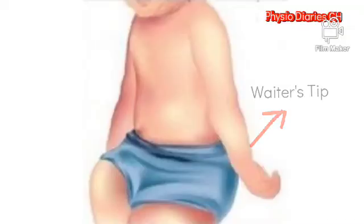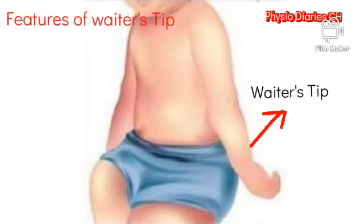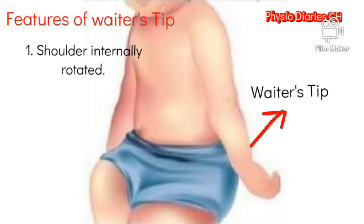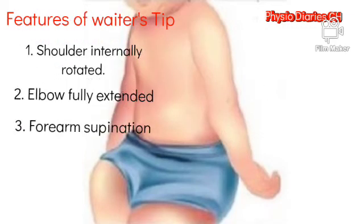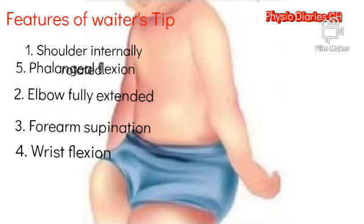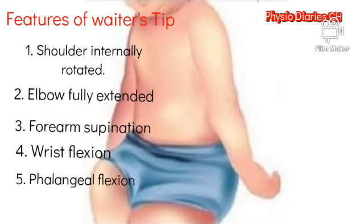The most classical presentation likely to be seen is the waiter's tip posture. This is seen when the child's arm shows the following features: shoulder internally rotated, elbow fully extended, forearm supination, wrist flexion, phalangeal flexion, and shoulder adduction. Any attempt to oppose these positions comes with resistance.